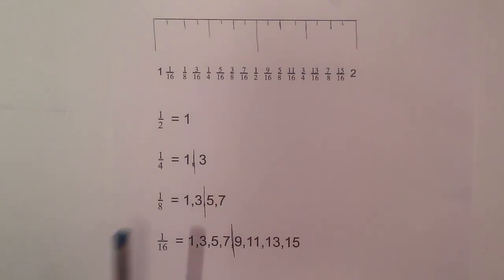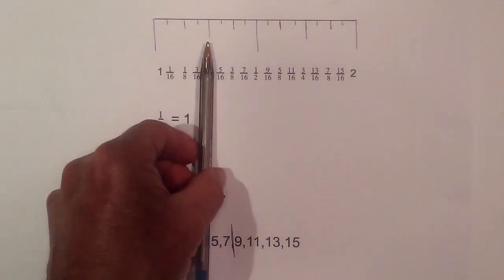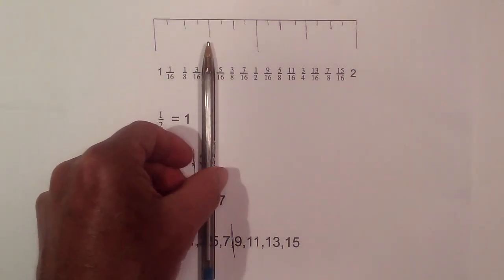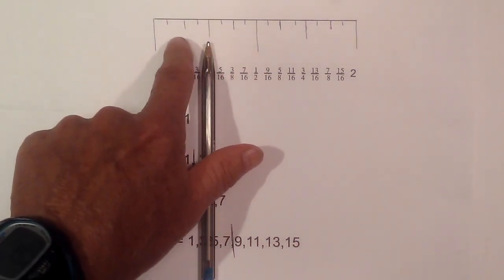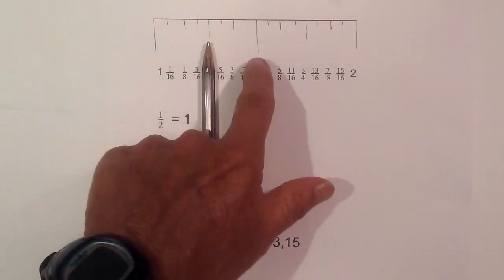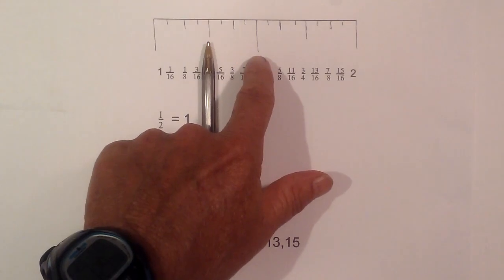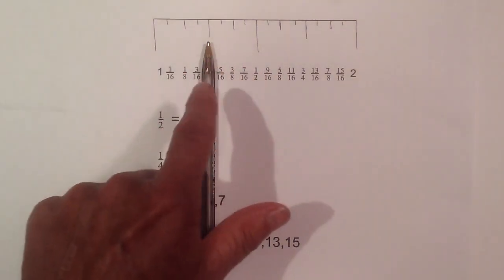So now let's put this to practice. Say you measure something and it comes to right here. Well, remember the tick marks. One half is the largest, one fourth is next, one eighth, and then the sixteenths. It's one fourth. I know it's before the one and a half. So it's got to be one fourth. So this would be one and one fourth.